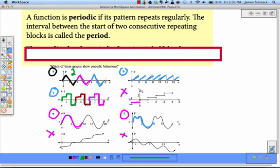In A, the period is two units. In B, the period is three units because that's the length of X before the cycle repeats itself. The period in C is three.